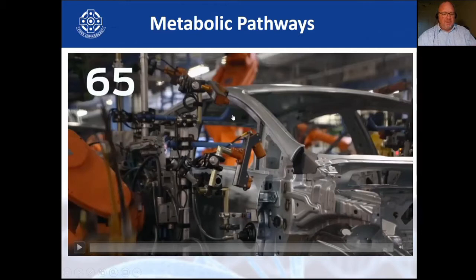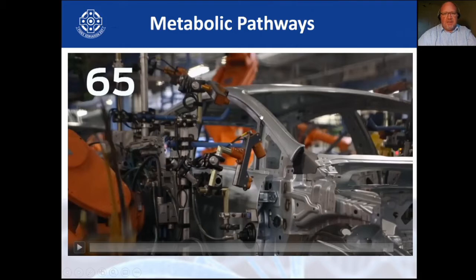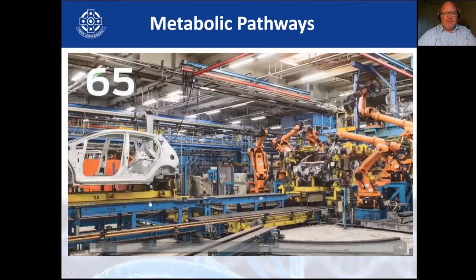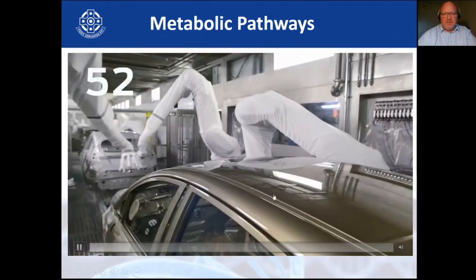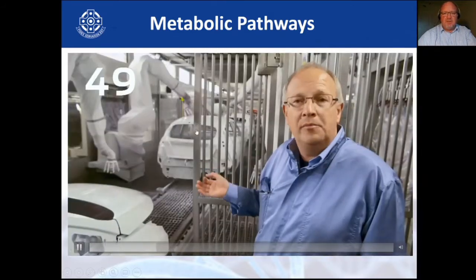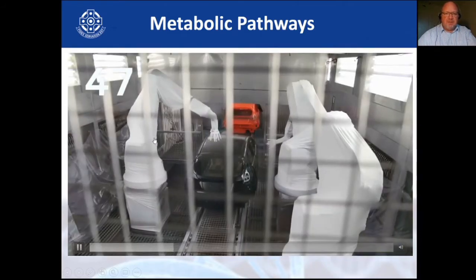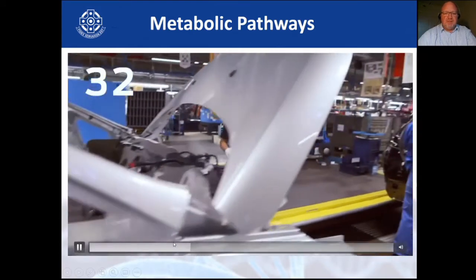A metabolic pathway — I've put together this little video. It's basically the Ford Fiesta being made in a factory with a lot of robots and humans. You need to think about the robots and the humans as enzymes, and your production line moving each car along is like your metabolic pathway. The body comes and they do a very specific task, over and over. From there it moves into a paint job, and all these guys do is paint, paint, paint all the time.